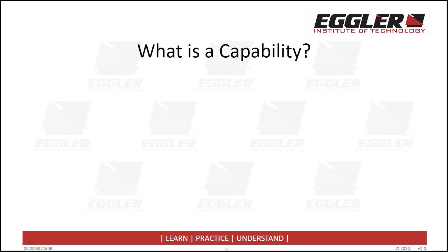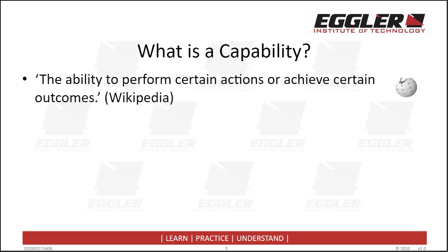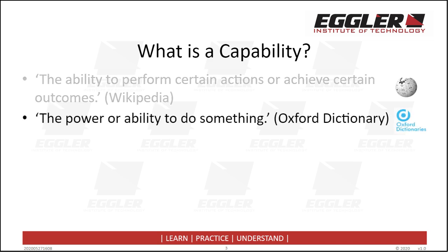So what is a capability? Various definitions can be found by exploring the multitude of references easily accessible on the internet. Wikipedia describes capability as the ability to perform certain actions or achieve certain outcomes. This definition is somewhat extended by the Oxford Dictionary as the power or ability to do something. But both of these definitions are not sufficient for use in the military context.